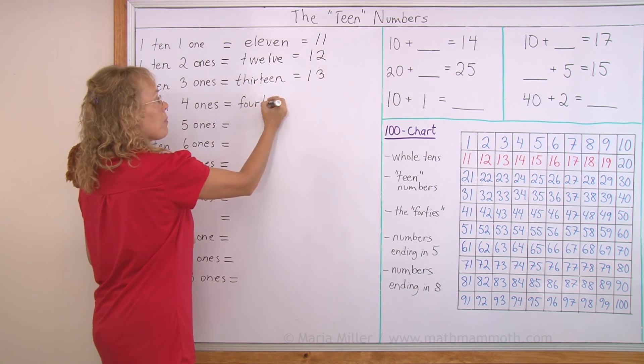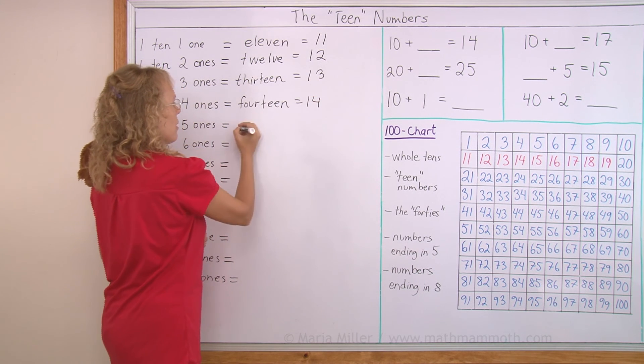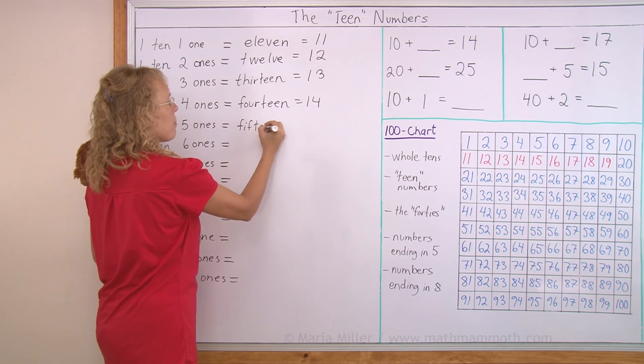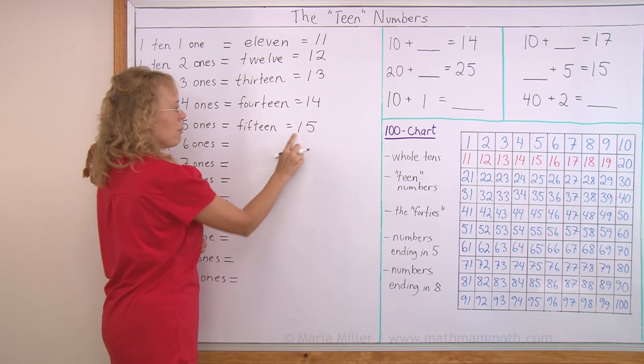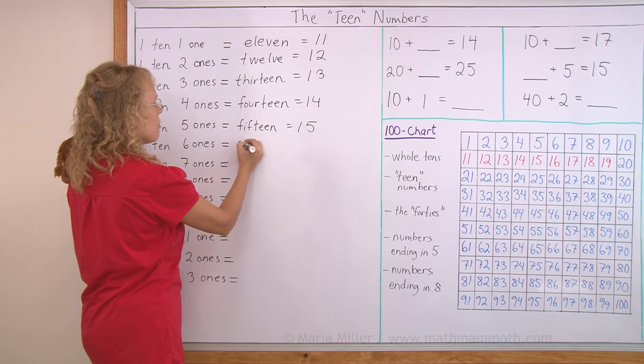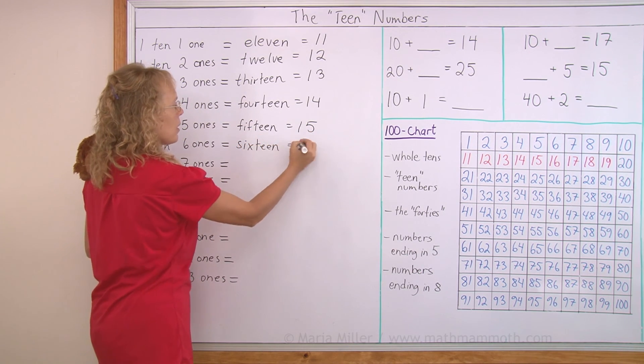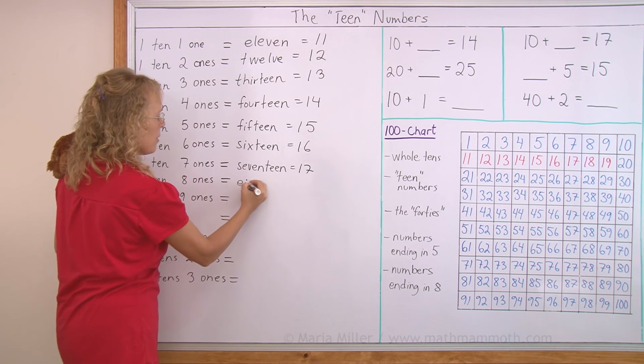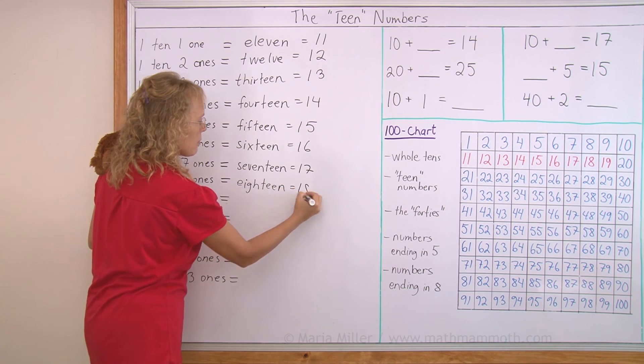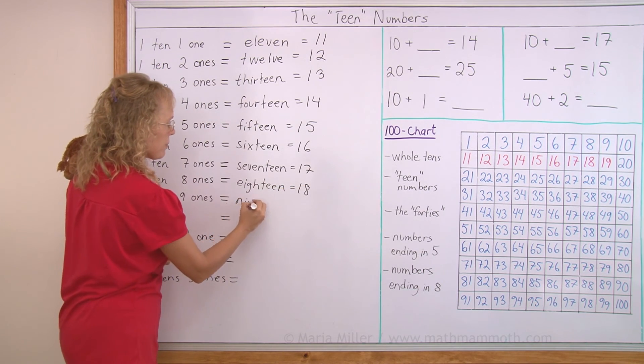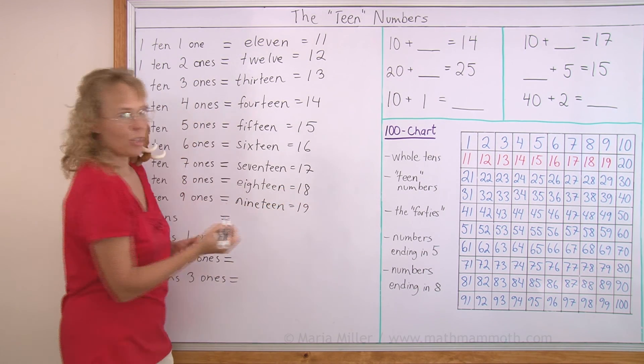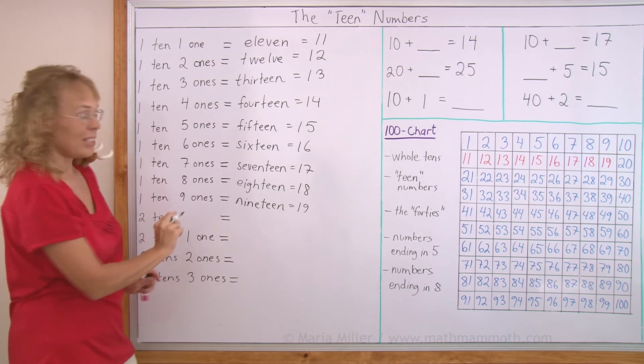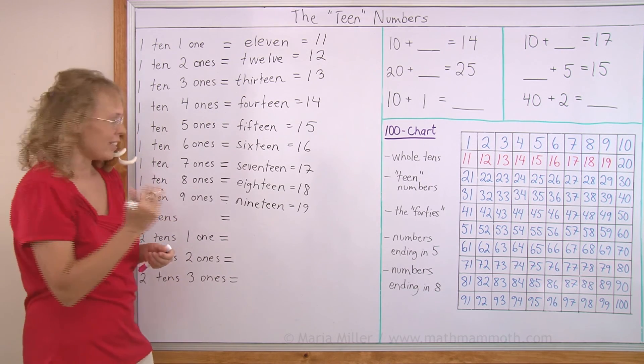The next one is 14, 1 4. And then the next one is 15, 1 5. 1 ten, 5. And then comes 16, and then 17, then 18, then 19. That's all our teen numbers. And then the next one is 20, 2 tens, 20.